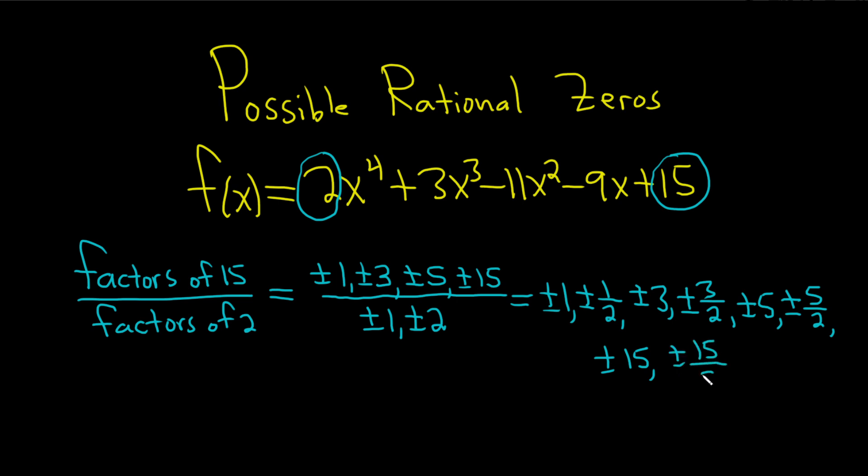That would be all the possible rational zeros. Sometimes you get repetition, and I really thought we would. And when that happens, you just don't write it twice. But in this case, there was no repetition at all. All the numbers are different.